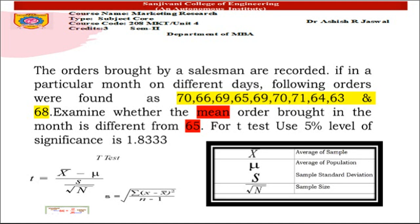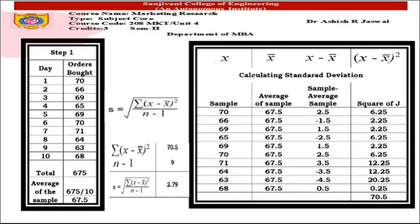In step 1, we calculate the average of the sample. For 10 days, different orders were given by the salesman. Summing all 10 orders gives 675. Dividing by 10 gives x̄ = 67.5. That is the average of the sample.